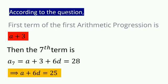When simplified, it becomes A plus 6D, 28 minus 3, that is 25. Alright.